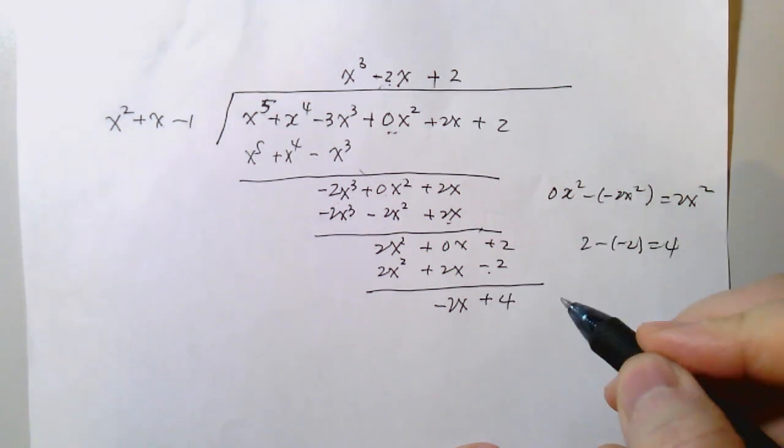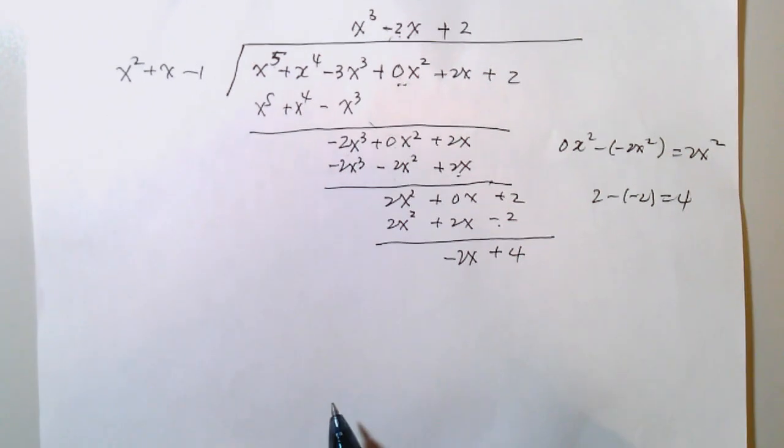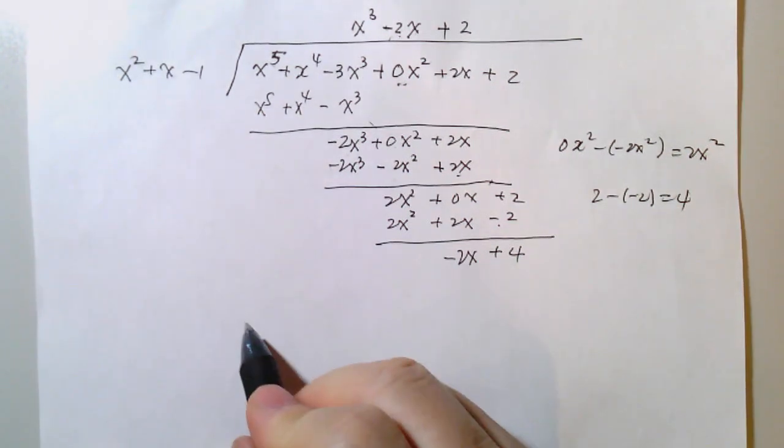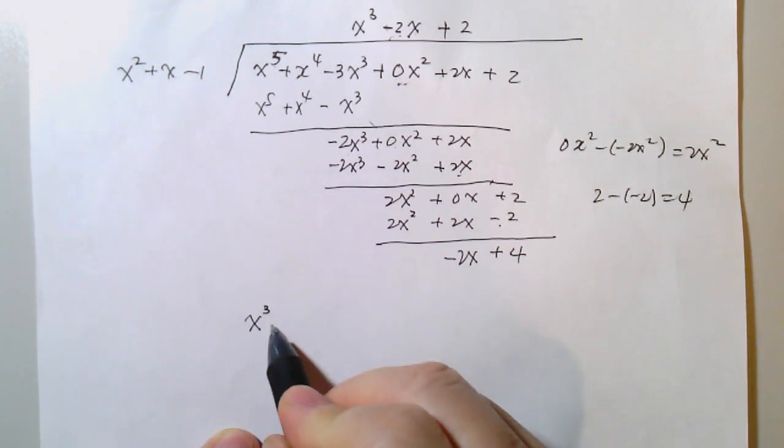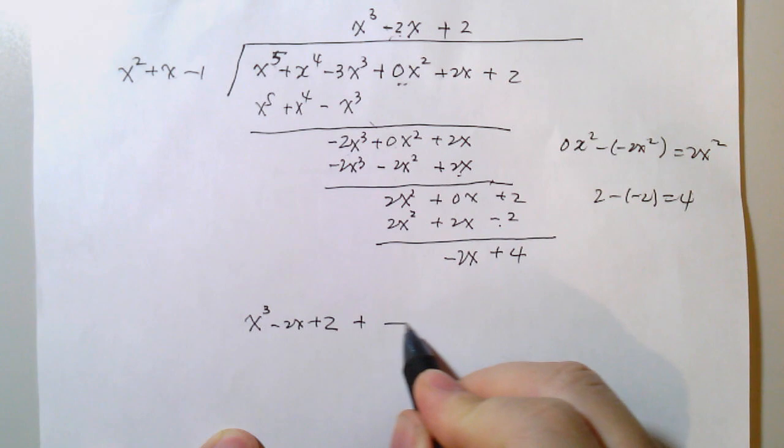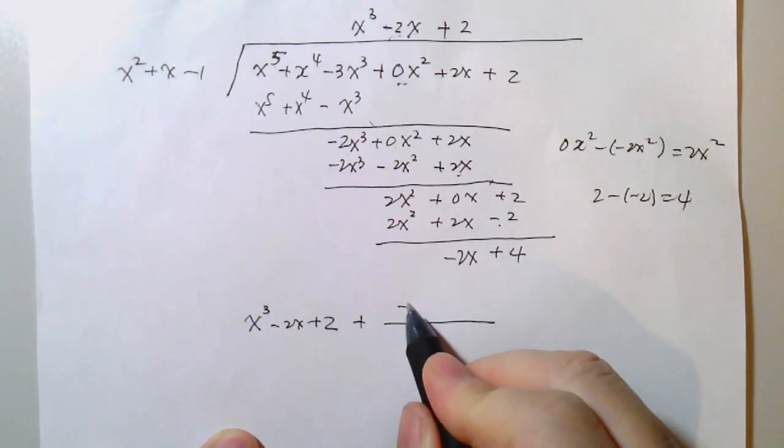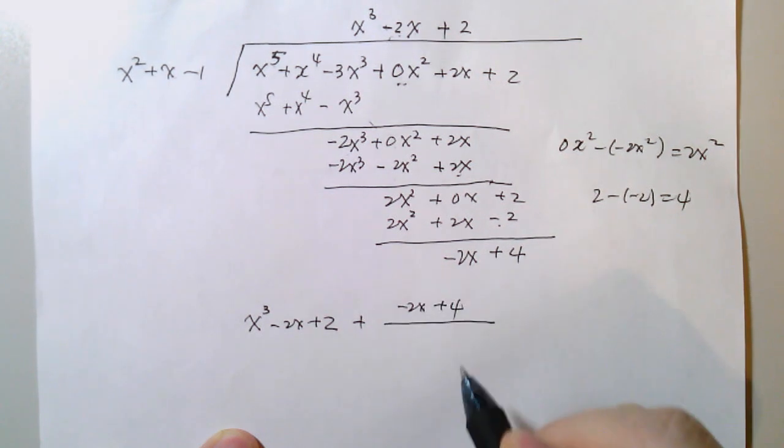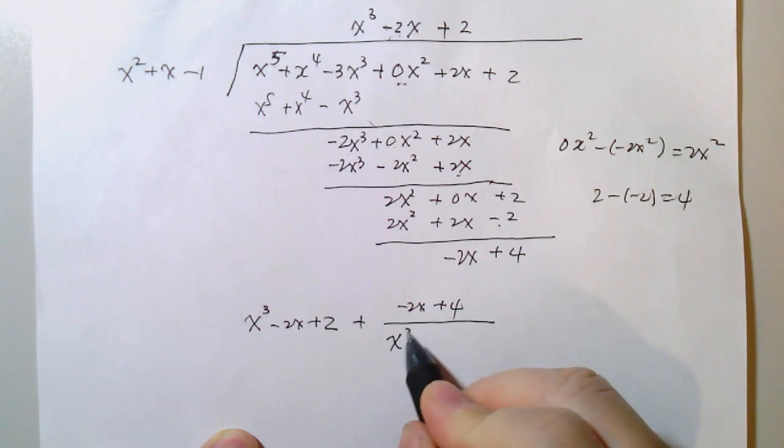So your final answer should be, the quotient x cubed, minus 2x plus 2, plus the remainder is negative 2x plus 4, divided by divisor x squared, plus x minus 1.